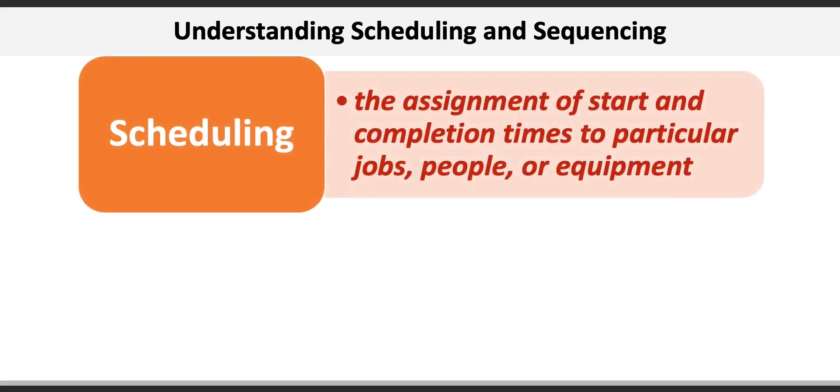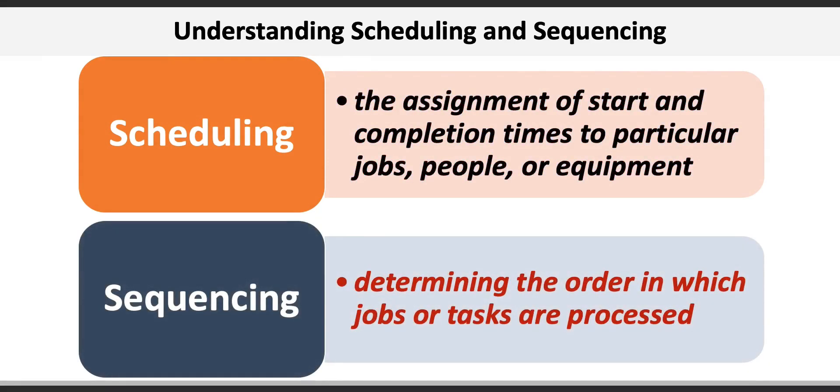Scheduling refers to the assignment of start and completion times to particular jobs, people, or equipment. Virtually all organizations schedule employees, jobs, or both. Sequencing refers to determining the order in which jobs and tasks are processed. For example, triage nurses must determine the order in which emergency patients are treated, and housekeepers in hotels must sequence the order of rooms to clean.